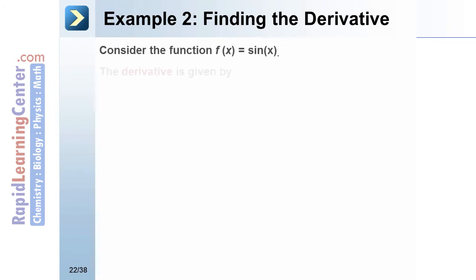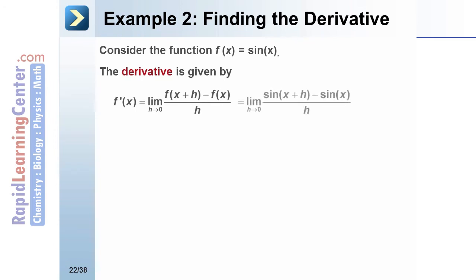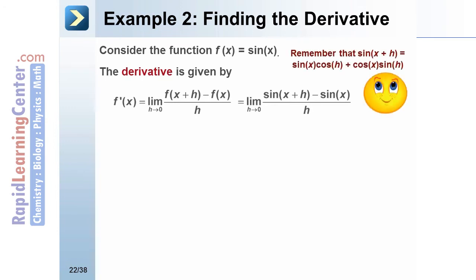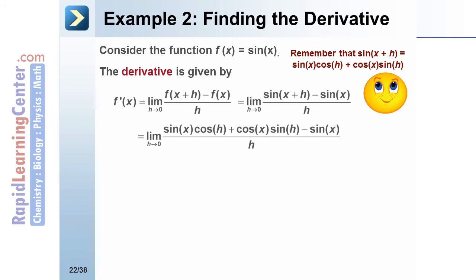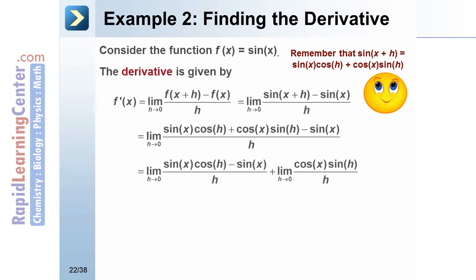Consider the function f(x) = sin(x). The derivative is given by f′(x) = the limit as h → 0 of [f(x + h) − f(x)] / h. Substituting gives the limit as h → 0 of [sin(x + h) − sin(x)] / h. We use the trigonometric identity: sin(x + h) = sin(x)cos(h) + cos(x)sin(h), and expand the function using that identity.